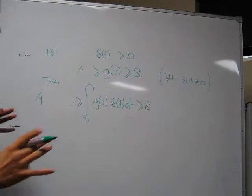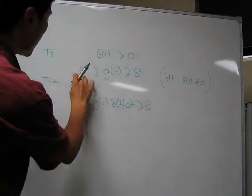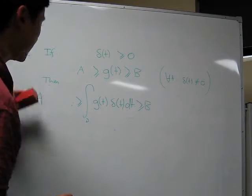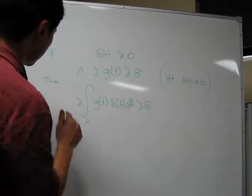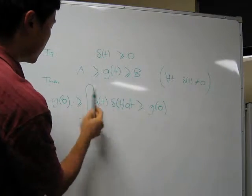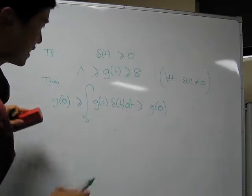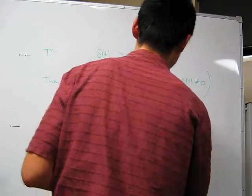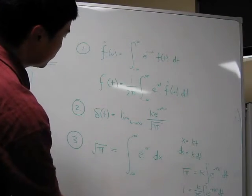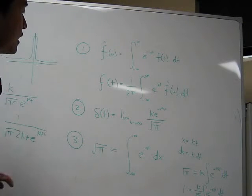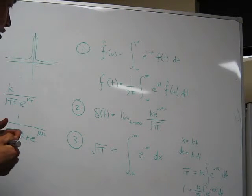The area underneath it is preserved — it is always equal to 1. So if a and b are the maximum and minimum values of g at all points where delta is not zero, there is only one place where delta is not zero, and that's t equals 0. So both bounds become g of 0, and there is only one thing this integral can possibly be: g of 0. The delta function doesn't really have any meaning by itself, because the limit doesn't exist. But if it's placed underneath an integration over t, its meaning is to get rid of the integration symbol and set t equal to 0.